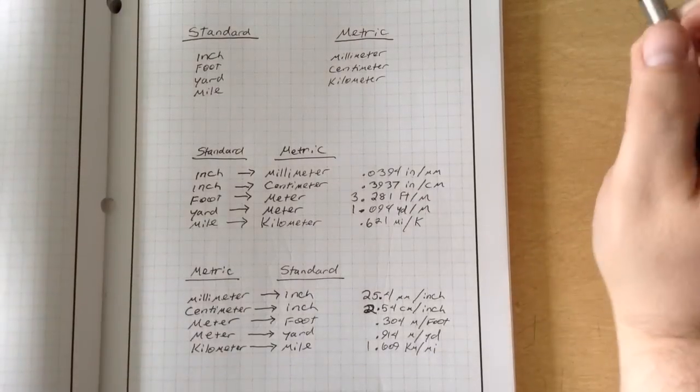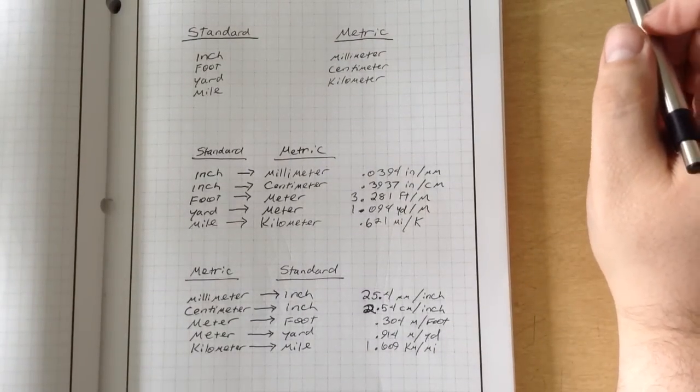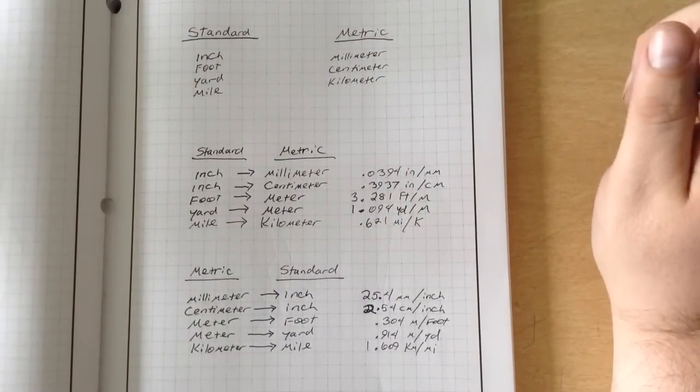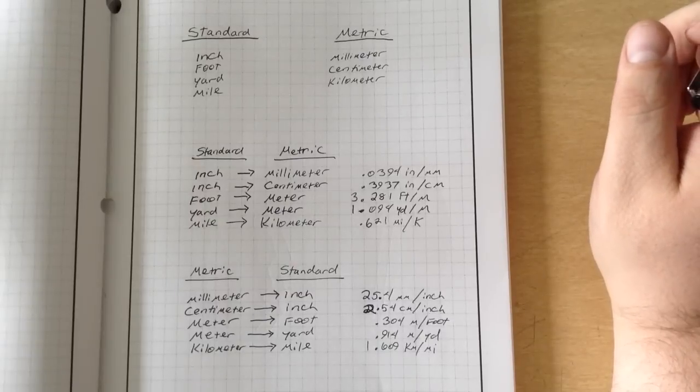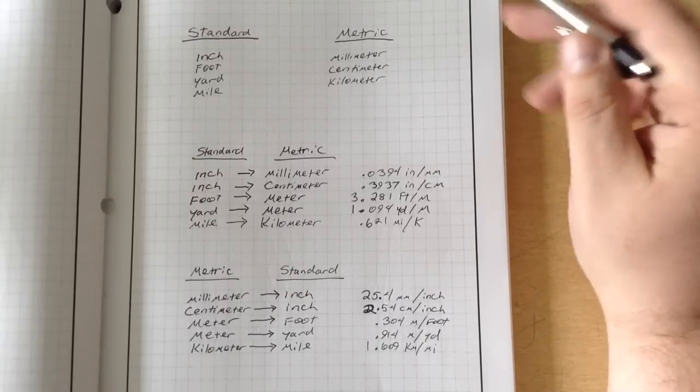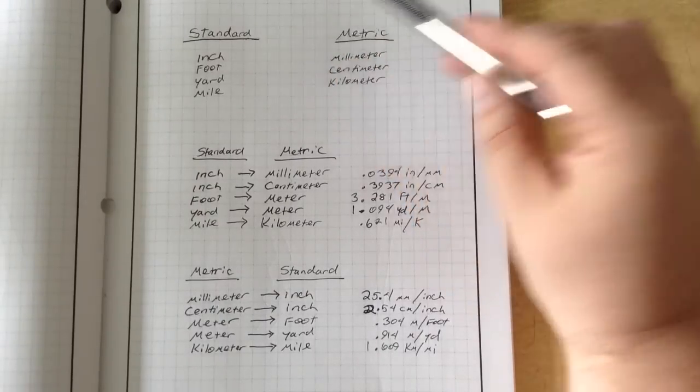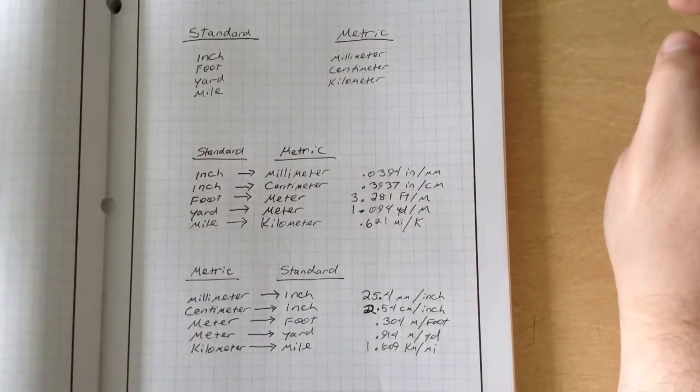Hey everybody, today we're going to talk a little bit about measuring. There's two major forms or systems of measurement that we're going to be using in this class. One is called standard measurement, the other is called metric measurement.